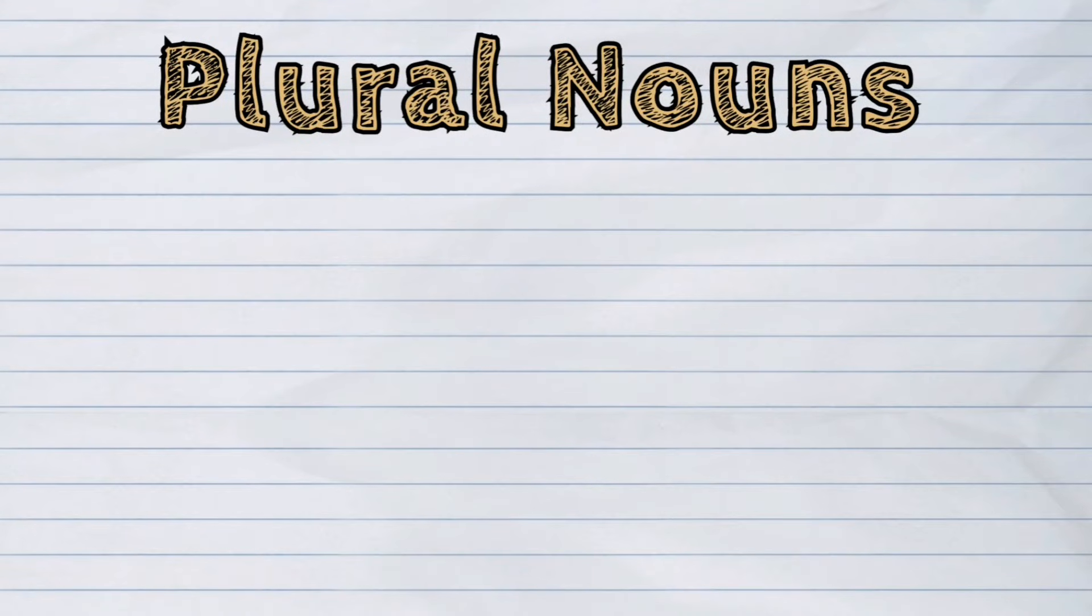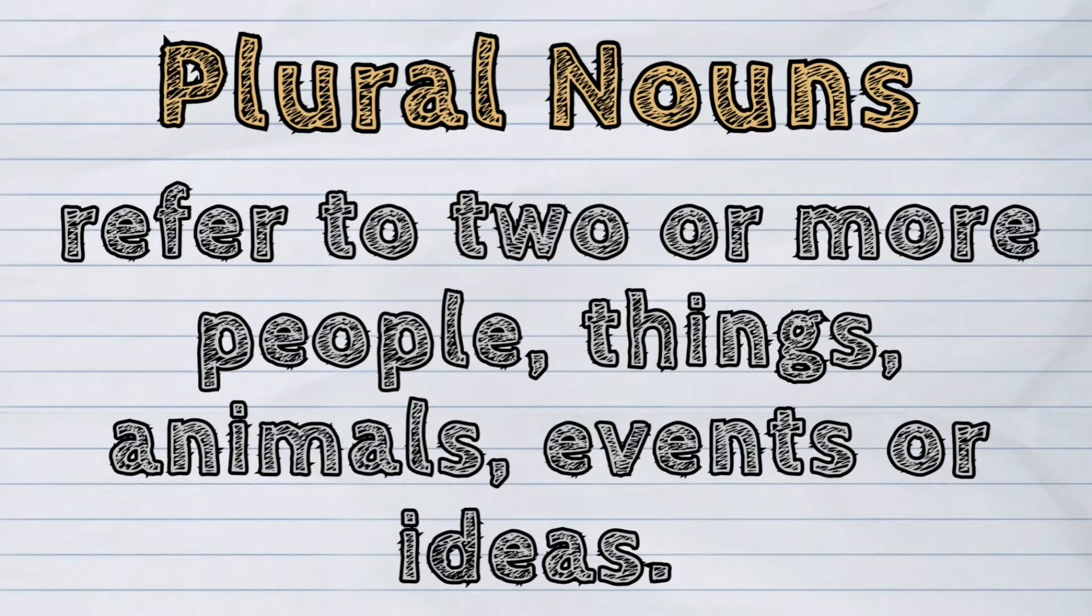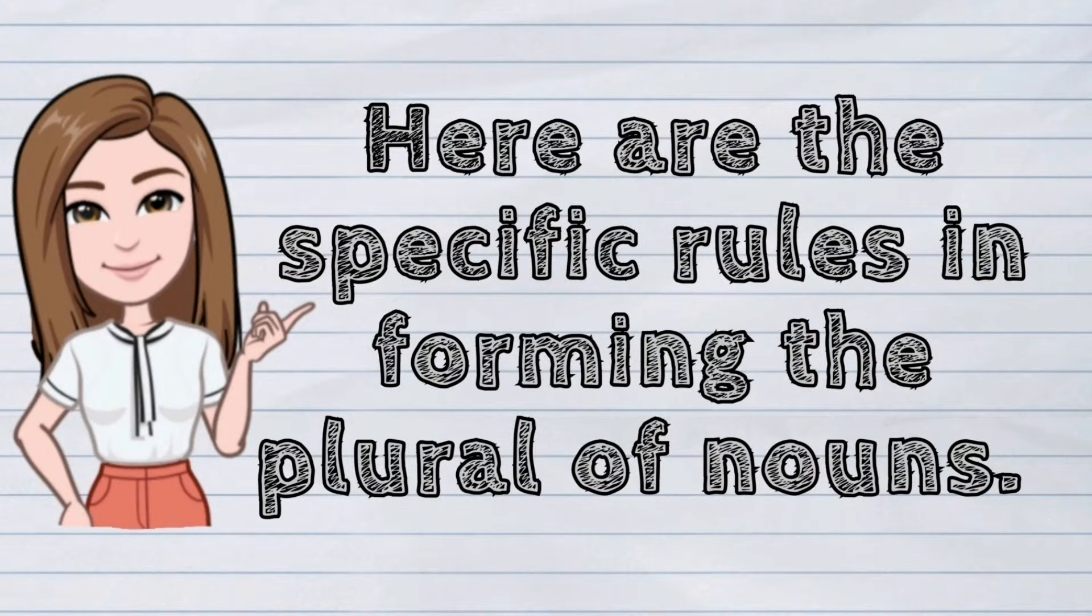Plural nouns refer to two or more people, things, animals, events, or ideas. Here are the specific rules in forming the plural of nouns.